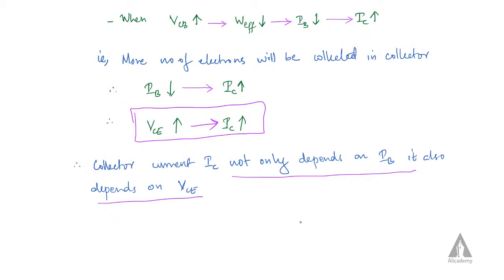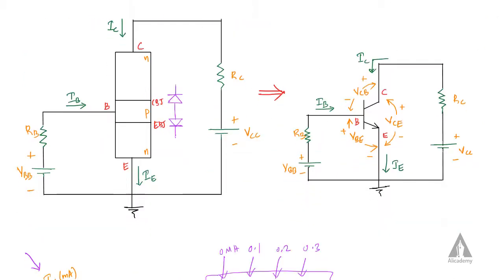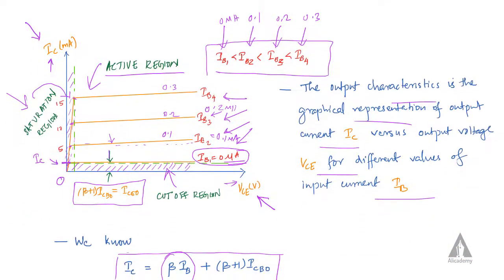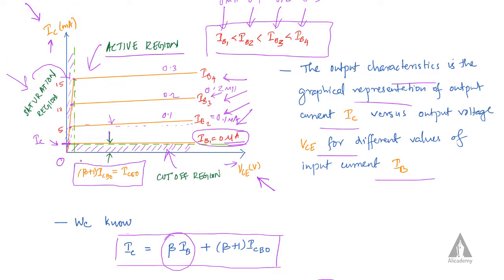So the output characteristics is a graph plotted between output voltage VCE and output current IC for different values of input current IB. We set a value of IB, then increase VCE and plot the IC value. IC first sharply increases then slightly increases, because IC depends not only on IB but also on VCE due to the Early effect.